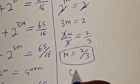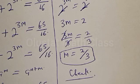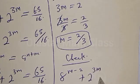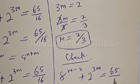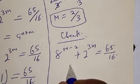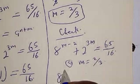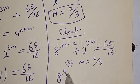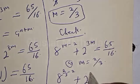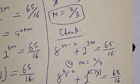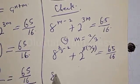That is our answer. Now let's check to confirm if our answer is right. The original equation is 8 raised to the power m minus 2 plus 2 raised to the power 3m must equal 65 divided by 16. At m equal to 2 over 3, we have 8 raised to the power (2 over 3 minus 2) plus 2 raised to the power 3 times (2 over 3).